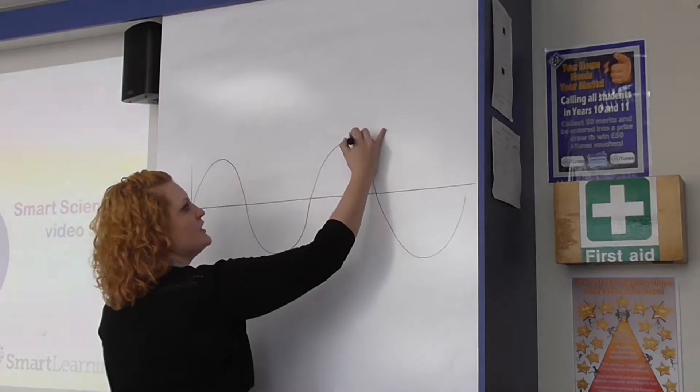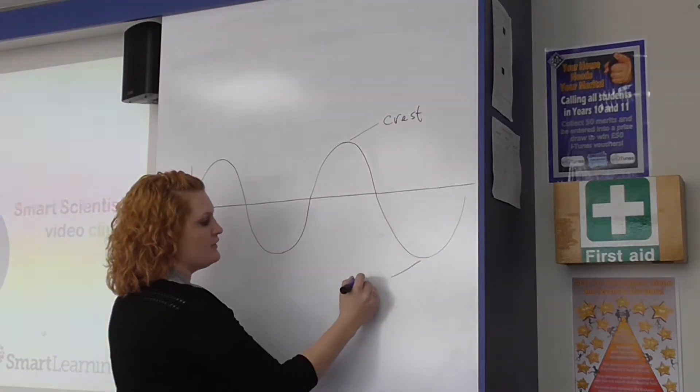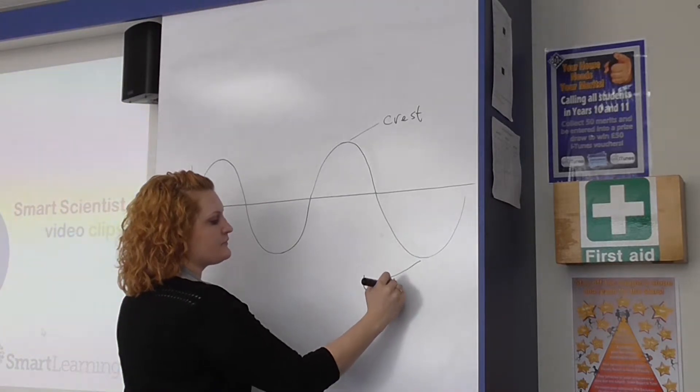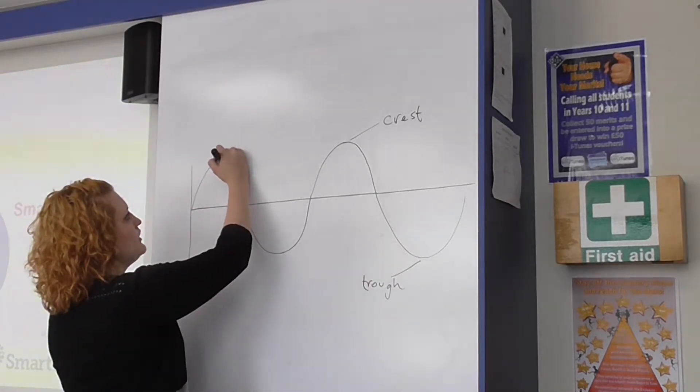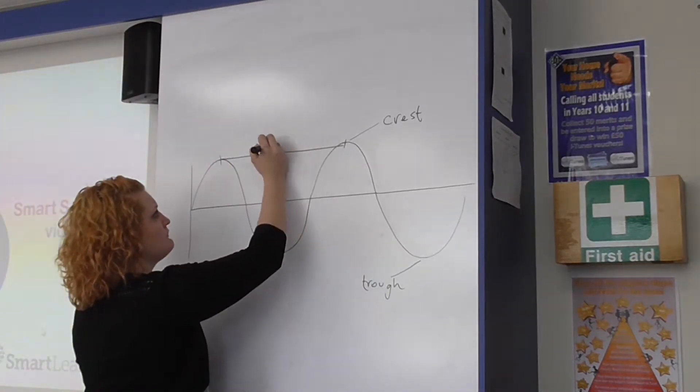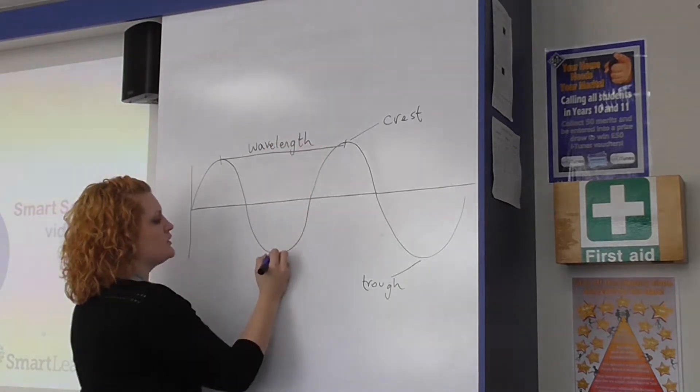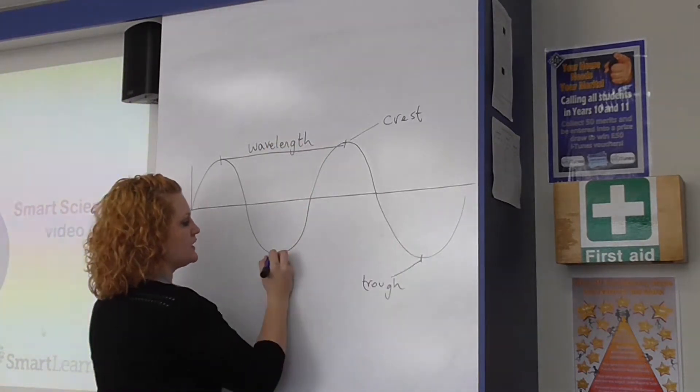So students need to be able to label a wave, they need to be able to label the crests and the troughs and also be able to label a wavelength going from the centre of one crest to the centre of another or the centre of a trough to the centre of the next one.